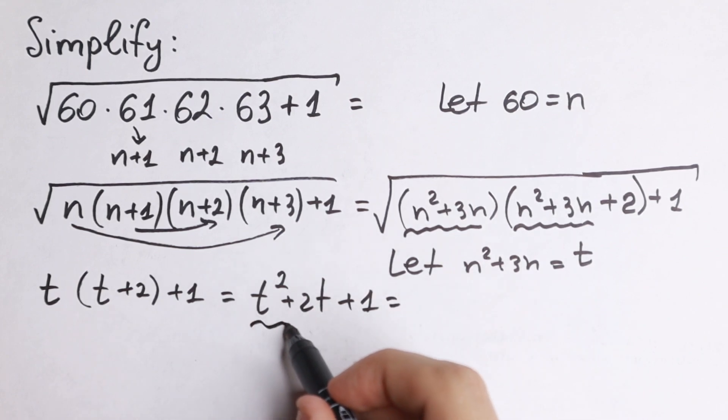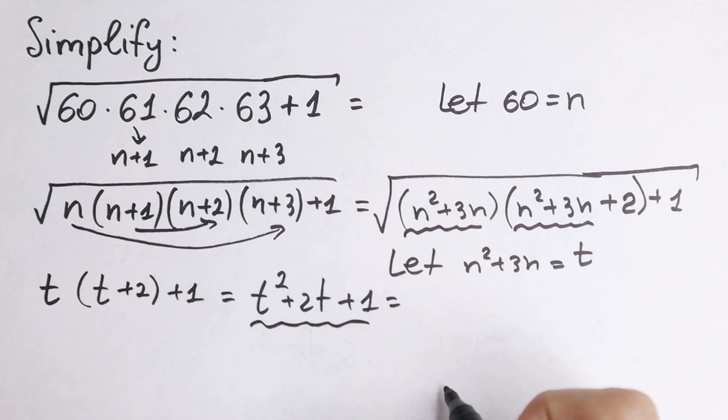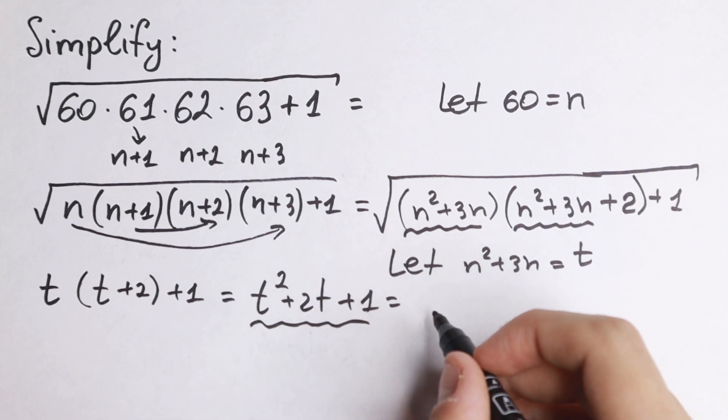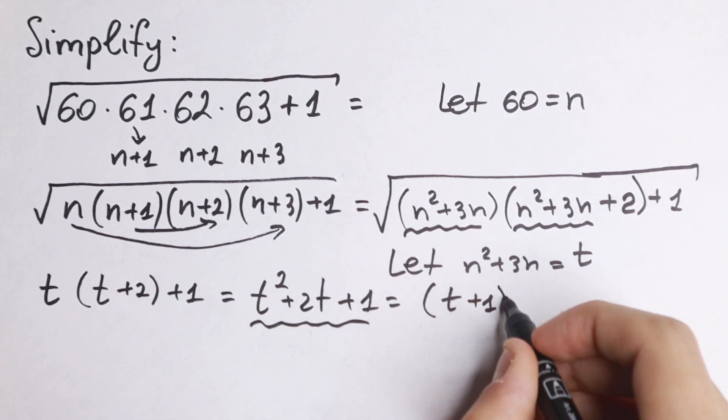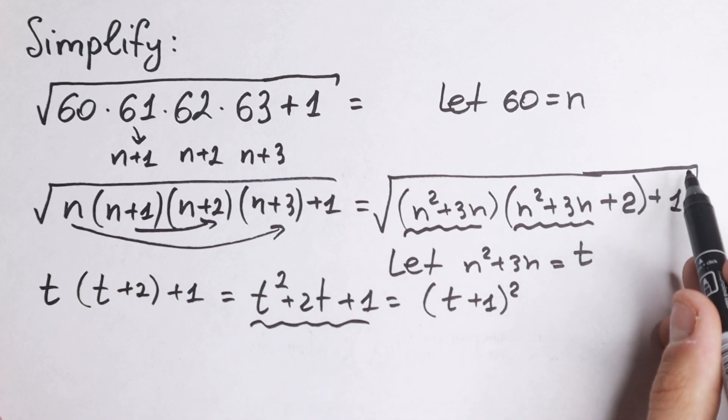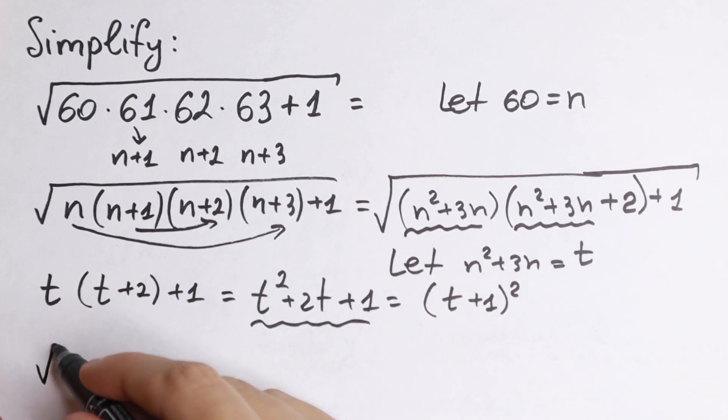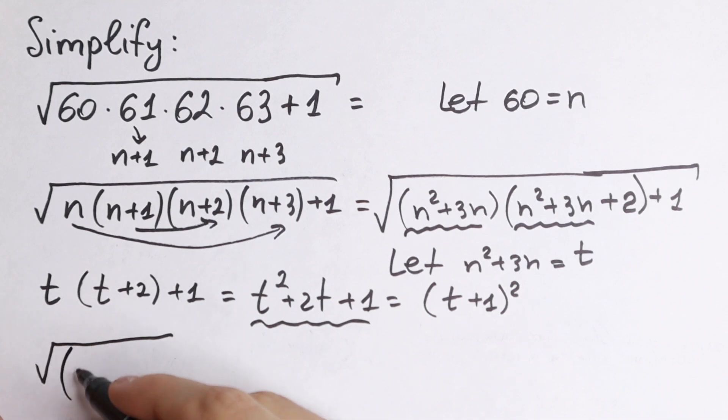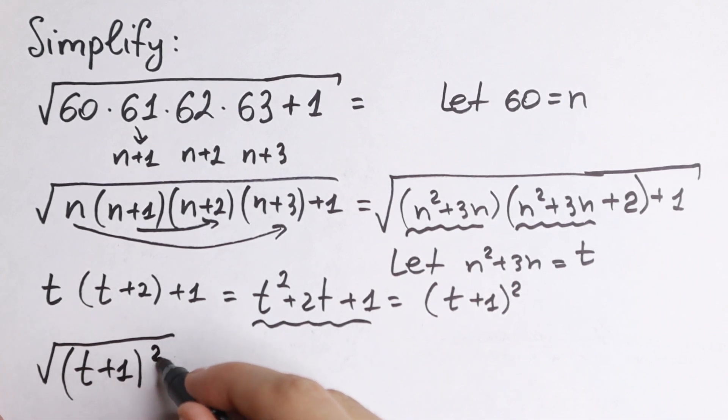If we look closely to this, this is our formula a square plus 2ab plus b square, which equals t plus 1 square. This is the expression without our square root sign, but we have the square root, so we need to include it: square root of t plus 1 square.